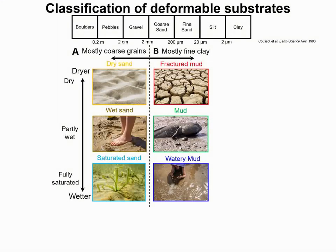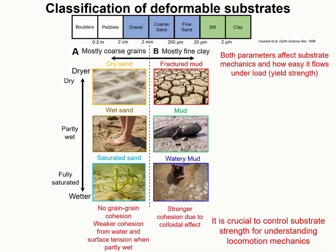Natural deformable substrates can have particles of different sizes. Pebbles and boulders are comparable in size to that of small fishes, so they behave less like deformable terrain and more like uneven or mostly rigid terrain. Here we only consider deformable substrates with particles that are much smaller in size compared to the animals. Substrates with mostly coarse grains behave differently compared to those with mostly fine clay particles. For example, sand with mostly coarse grains has no grain-to-grain cohesion and has weaker cohesion when water is added, whereas mud with mostly fine clay has stronger cohesion due to the colloidal effect.